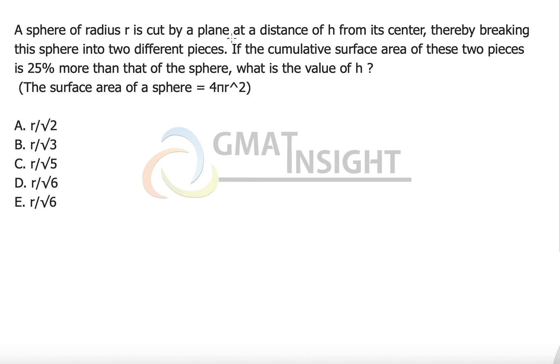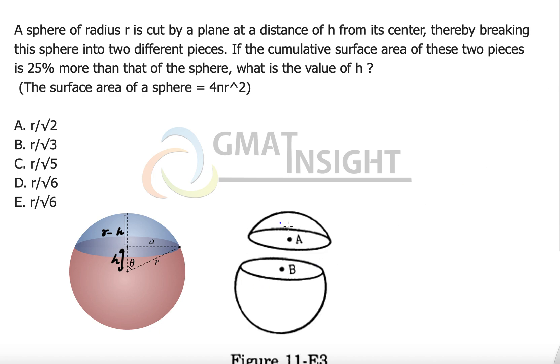A sphere of radius r is cut by a plane at a distance h from its center, thereby breaking this sphere into two different pieces. Let me quickly depict what exactly is happening. We have a sphere here, and at a distance of h from its center there is a plane that is cutting this sphere, and now finally we are getting two such pieces.